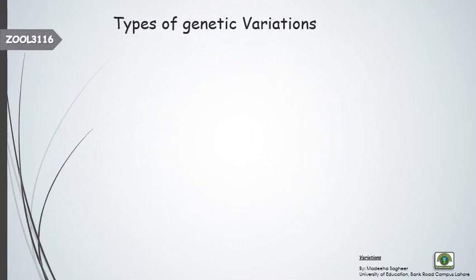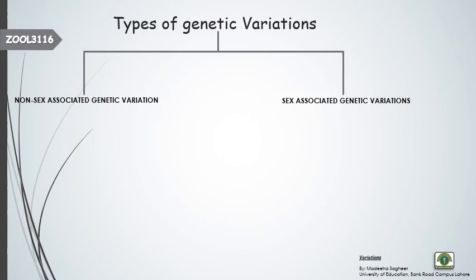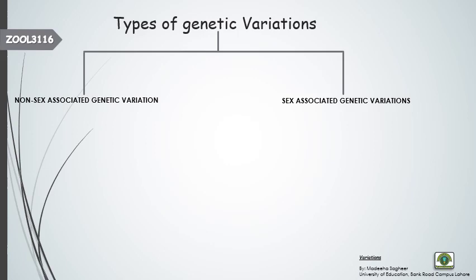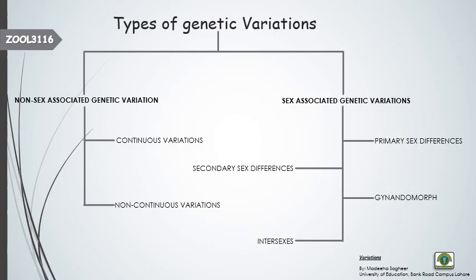Now we will discuss the types of genetic variations present within a single population. There are two major types: sex-associated genetic variations and non-sex-associated genetic variations. Sex-associated genetic variations are further divided into four types: primary sex differences, secondary sex differences, gynandomorph, and intersexes. Non-sex-associated genetic variations are divided into continuous variations and discontinuous variations.